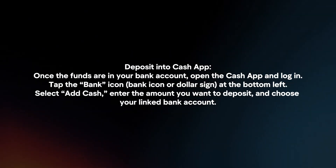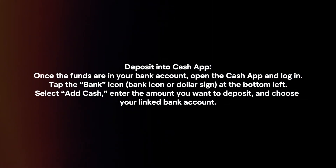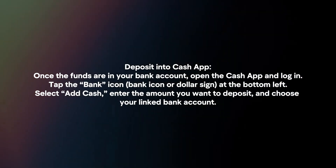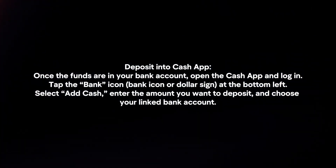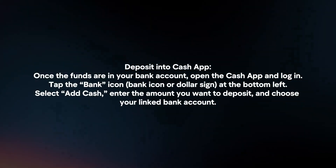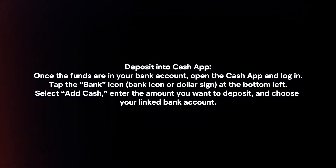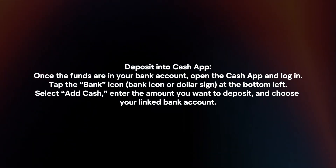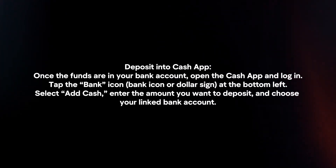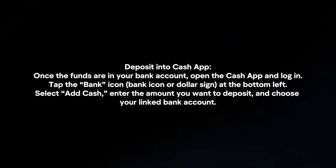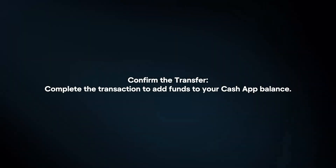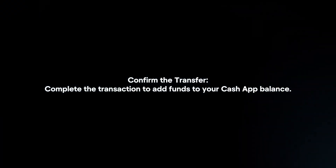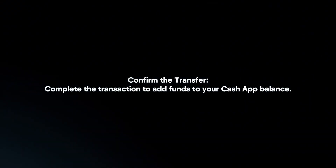Deposit into Cash App. Once the funds are in your bank account, open the Cash App and login. Tap the bank icon at the bottom left. Select Add Cash, enter the amount you want to deposit and choose your linked bank account. Confirm the transfer. Complete the transaction to add funds to your Cash App balance.